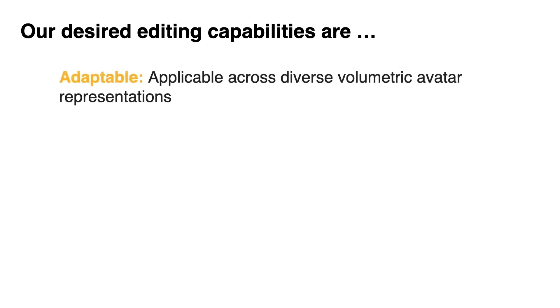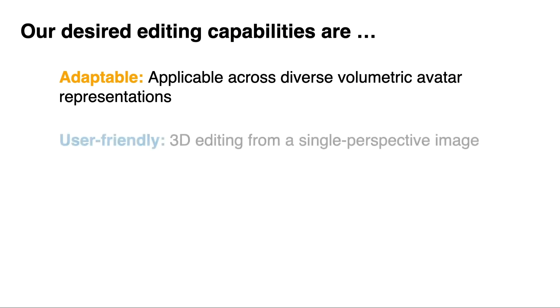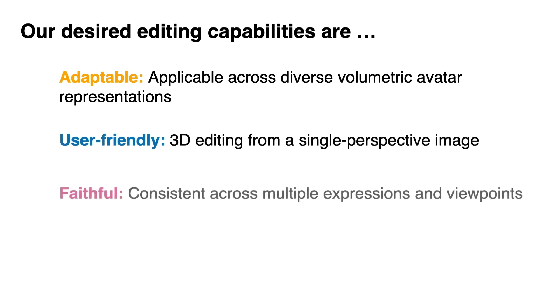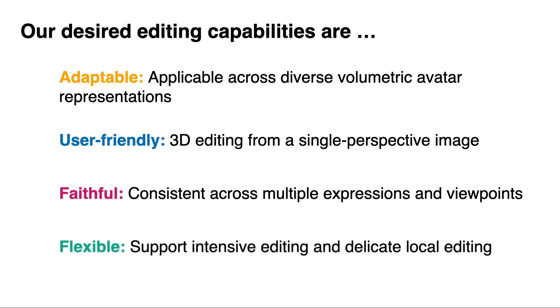Therefore, our desired editing functionality on the animatable avatar should have the following properties. First, adaptable: the editing approach should be applied to various volumetric avatar representations. Second, user-friendly: users can easily edit the 3D avatar with a single image. Third, faithful: the rendered novel view of the edited avatar should be consistent across multiple expressions and viewpoints. Fourth, flexible: the approach should support both intensive editing and delicate local editing.